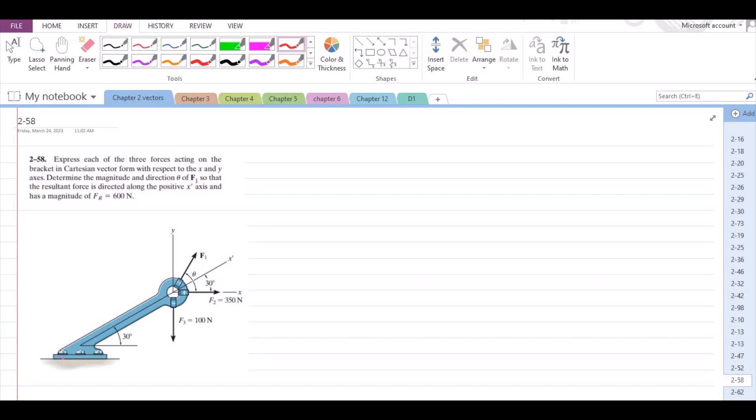So to solve this problem, first of all we have to write all the forces in terms of Cartesian vector form. So for F1, I have two components, one vertical component and one horizontal component.